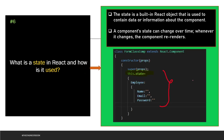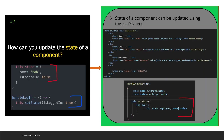The next question is: what is state in React and how is it used? A state is a built-in React object used to contain data or information about a component. A component's state can change over time, and whenever it changes the component re-renders. For example, in a class component you can declare a component called Employee with three parameters: name, email, and password. When hitting an API and getting those values, you set them using this.setState.